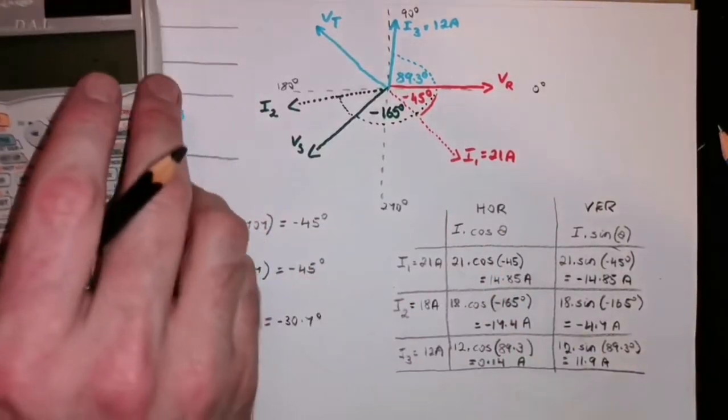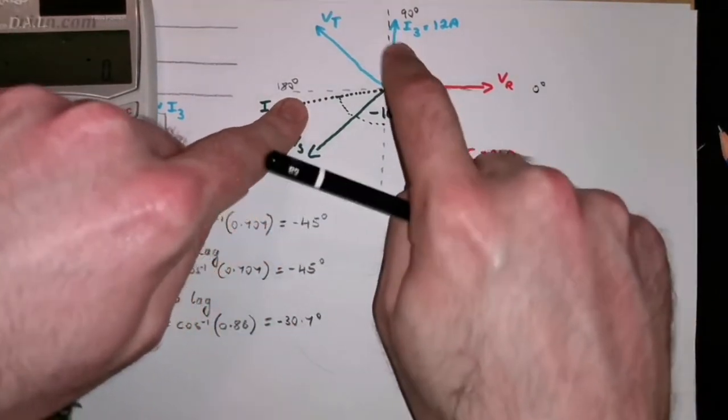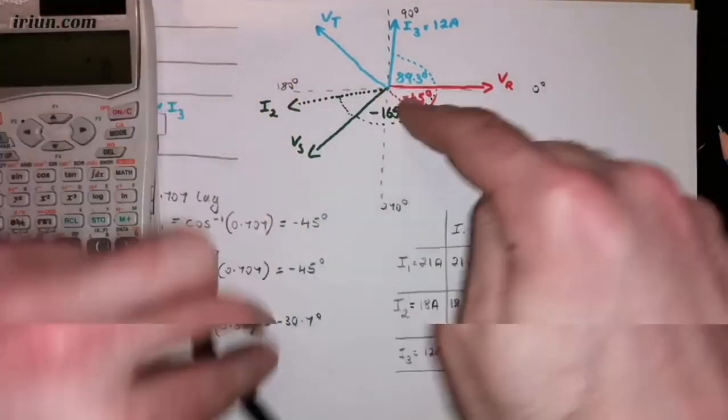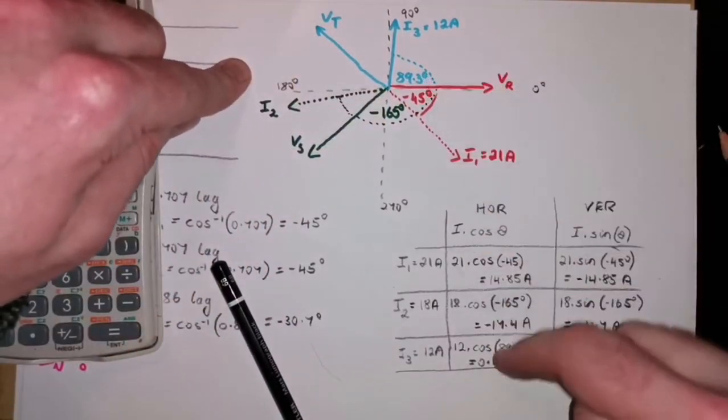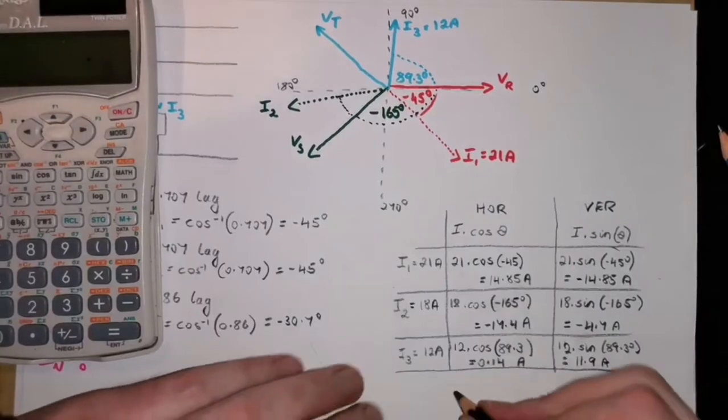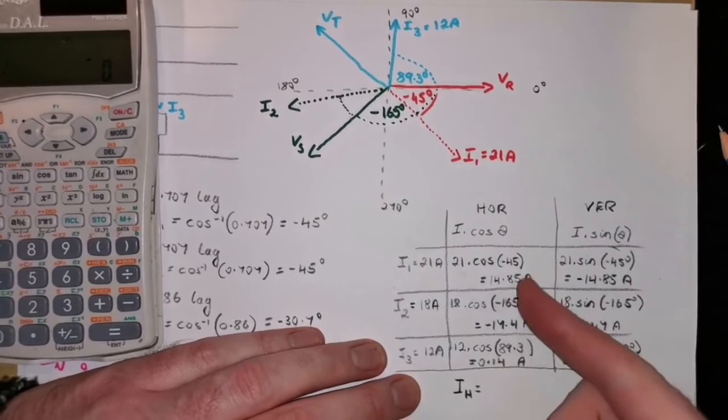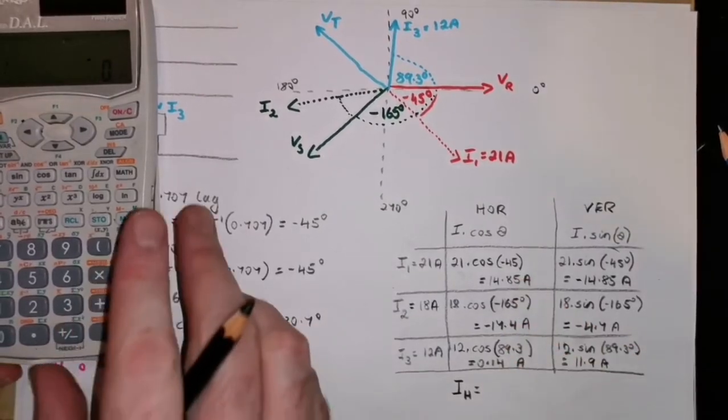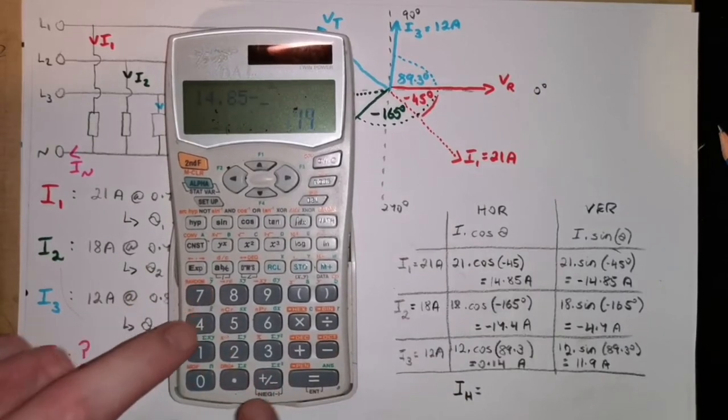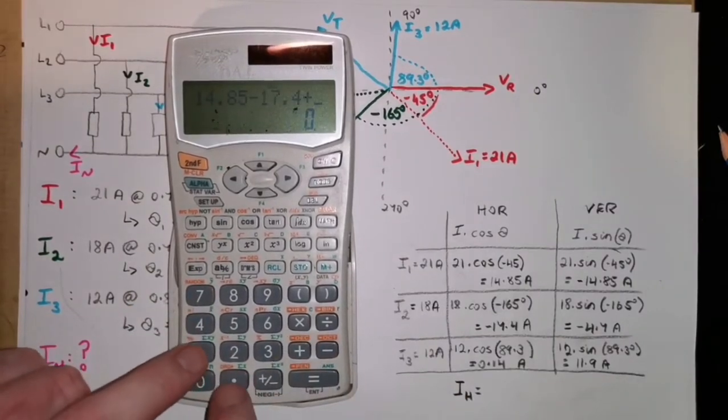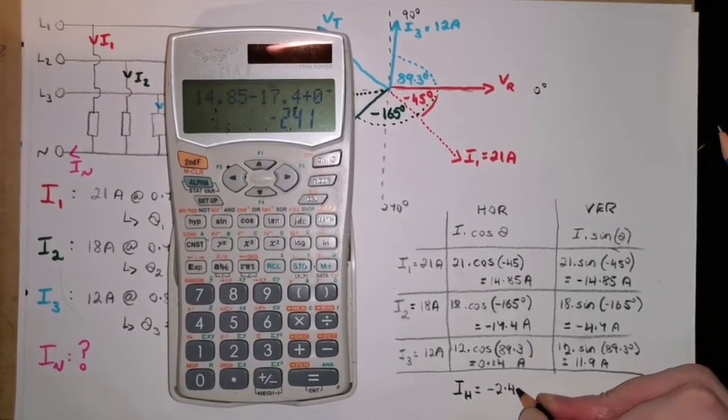So, what we've done at this point here is, we've got all the horizontal parts of each of these currents. So, there's some horizontal that way, some horizontal that way, and a little bit on the right. So, what we're actually doing here is, we're working out the total horizontal elements. And, it's those three values added up. And, let's do that. 14.85 minus 17.4 plus 0.14. I'm getting minus 2.41 amps on my end.